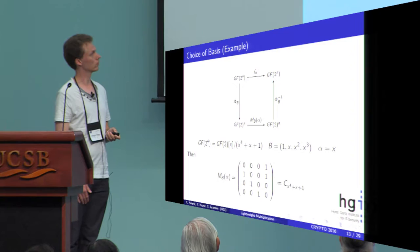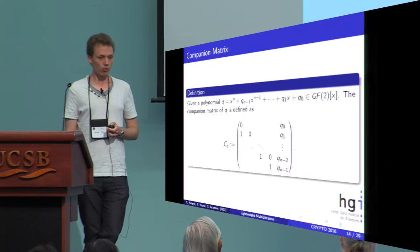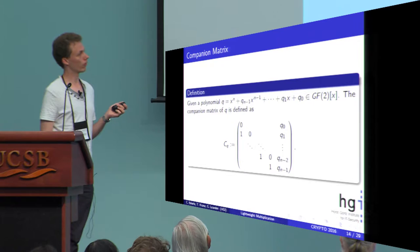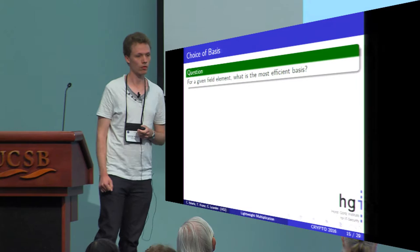This is a special kind of matrix, a so-called companion matrix of this irreducible polynomial. In general, the companion matrix is defined as follows: for a polynomial in GF(2), the companion matrix is defined as having all ones in this minor diagonal and the coefficients of the polynomial in the last column.